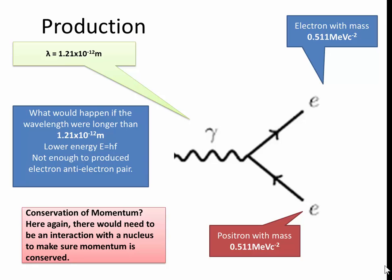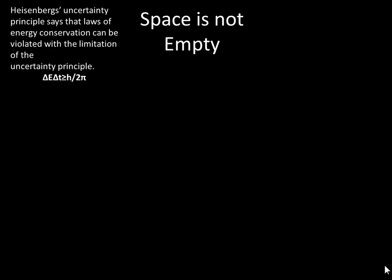Now, what is the consequence of this pair production? Space is not empty. Heisenberg's uncertainty principle says that the laws of energy conservation can actually be violated only within the limitation of the uncertainty principle. And this is delta E delta T is going to be greater than H divided by 2 pi.